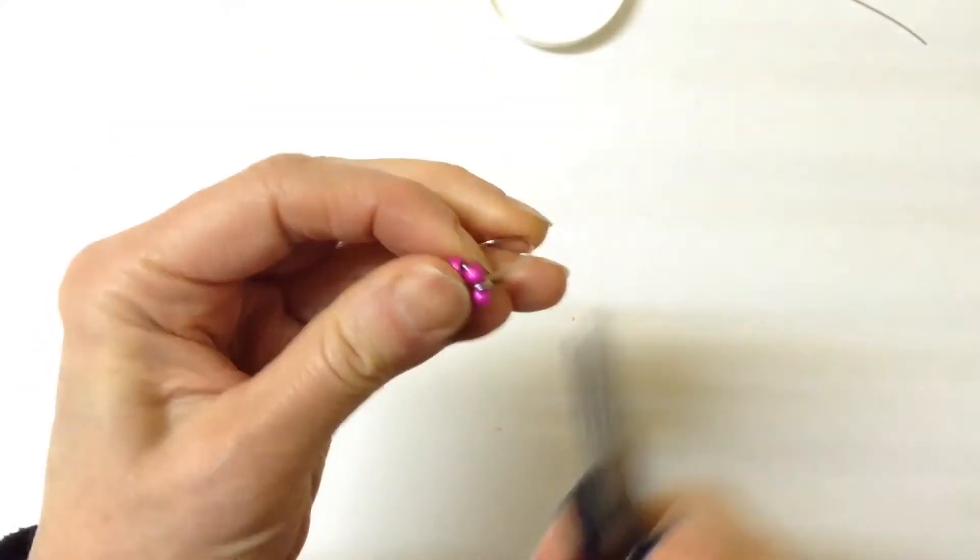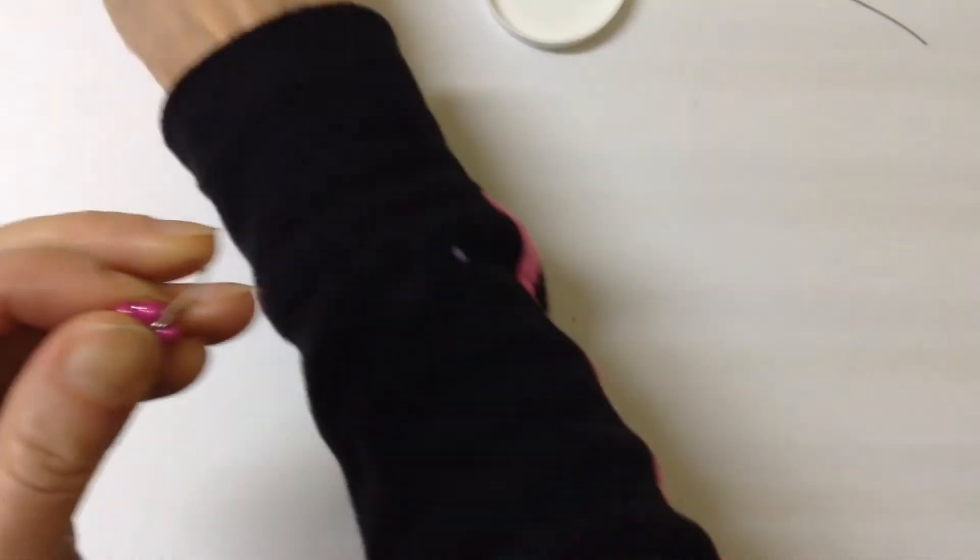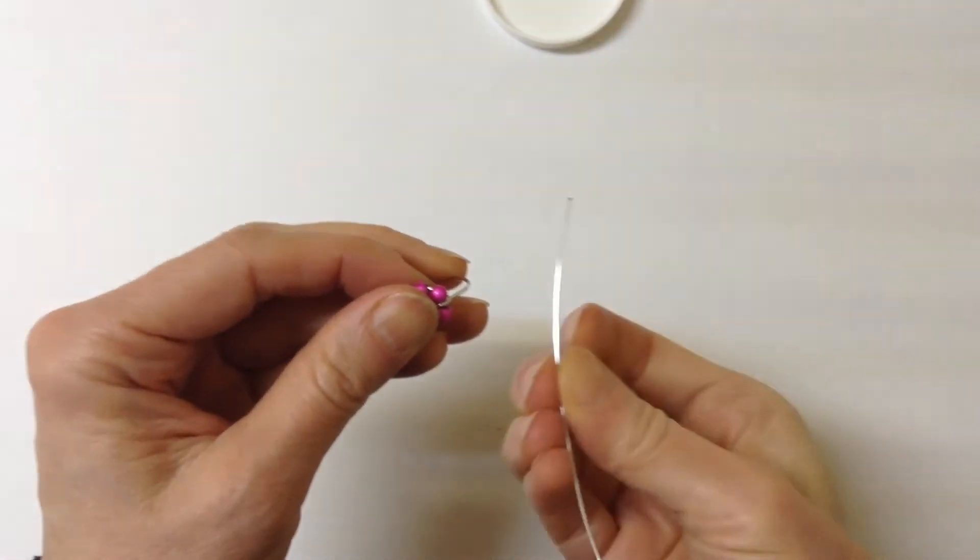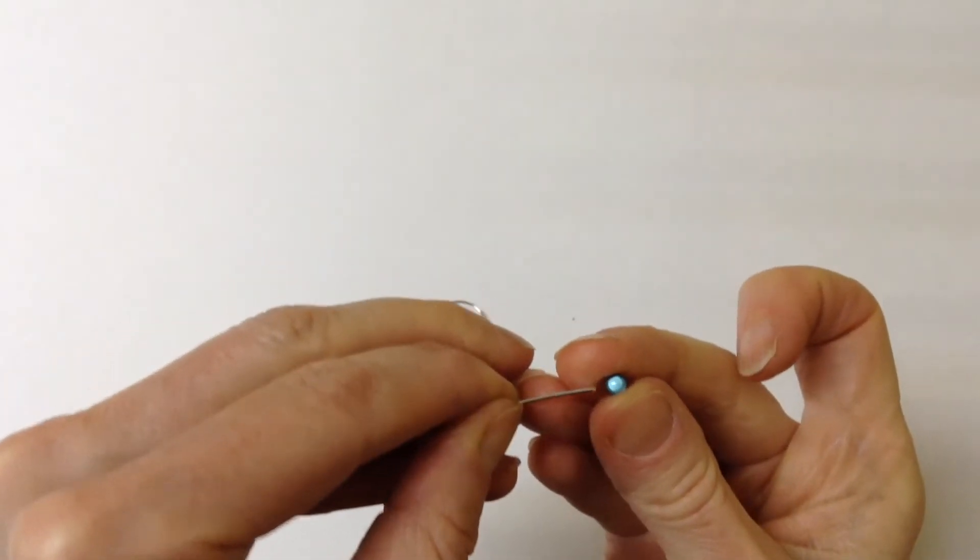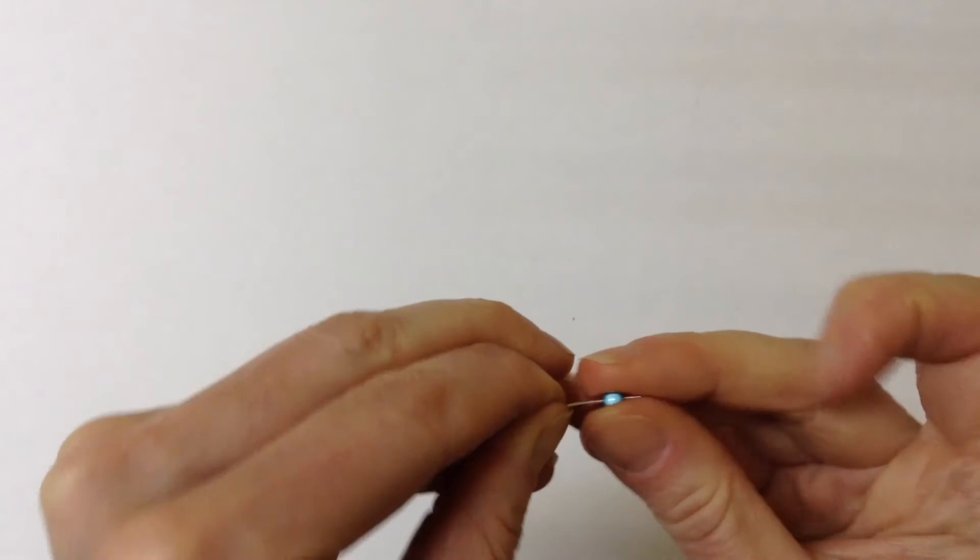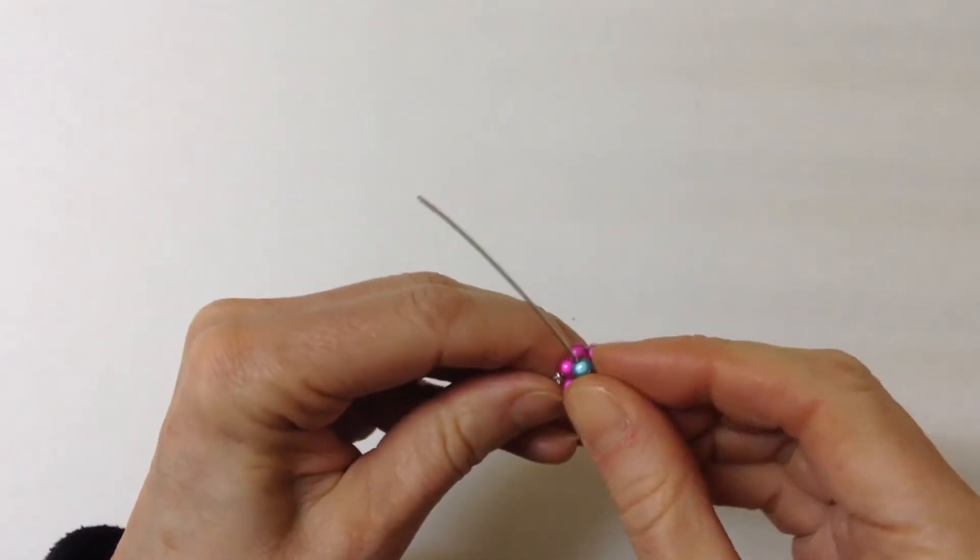So now that the edge is cut we just pinch it in a little bit. Then we'll take our other piece of wire and take our last bead which is in a contrasting color like that and then center it on the ring.